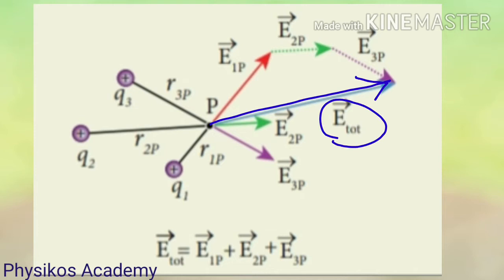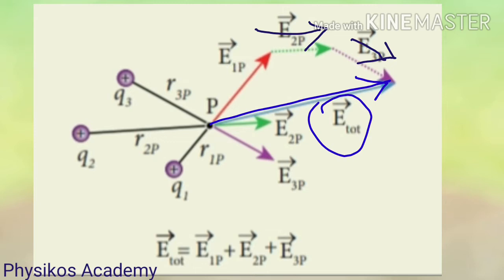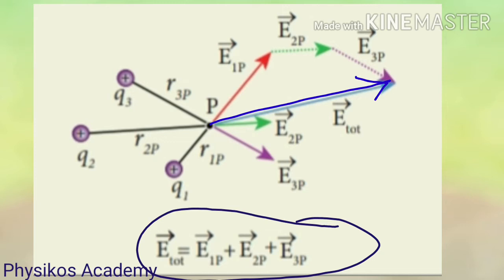So the total electric field for more than two charges is found along the same line using the superposition principle. The superposition principle gives us the total electric field: E-vector total is equal to E-vector 1P plus E-vector 2P plus E-vector 3P.